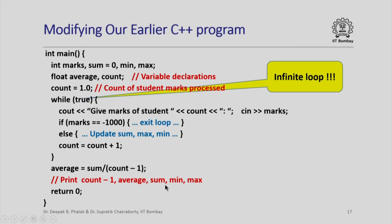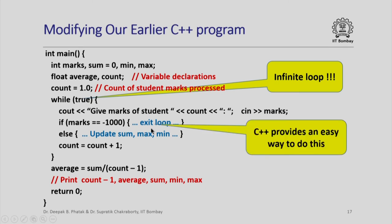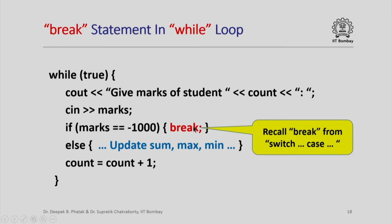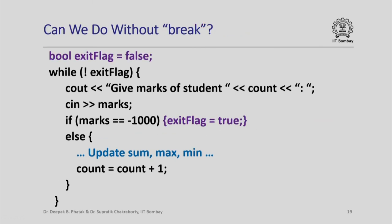We exit the loop when marks equals minus 1000. C++ provides an easy way to do this — the break statement. We simply write: if (marks == -1000) break. You may recall we also used the break statement when discussing switch-case statements in an earlier lecture.